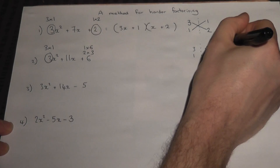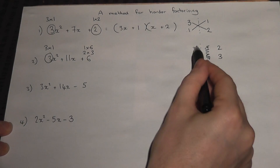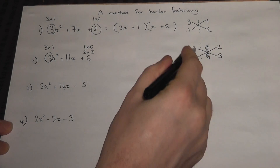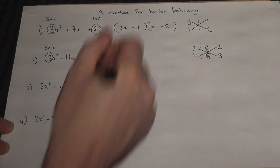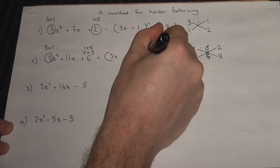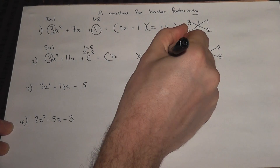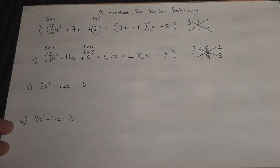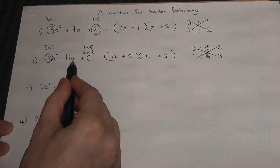I can then try 2 and 3 instead. 3 times 2 is 6, 1 times 3 is 3, and 6 plus 3 is 9 — no. But 3 times 3 is 9, 1 times 2 is 2, and 9 plus 2 is 11. So we've found the correct configuration. The 3x gets times by a 3, so I put the 3 in the other bracket. The x gets times by 2, so I put the 2 into the other bracket. This gives 3x squared, a 6, and a 2x and a 9x gives the 11x.